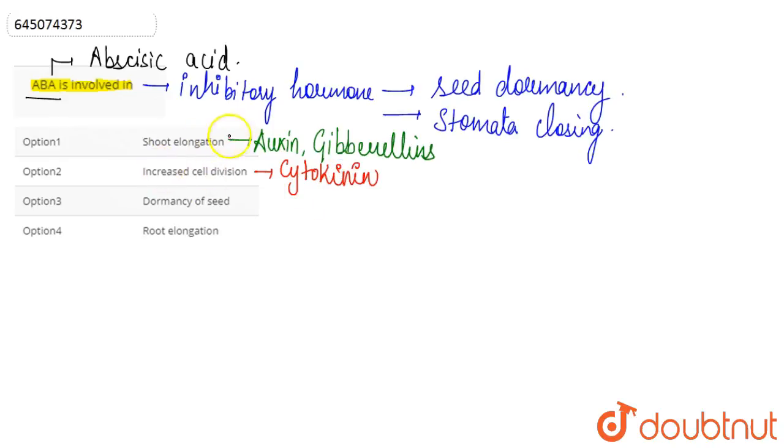Then dormancy of seed, as we've discussed, is promoted by ABA or abscisic acid. And root elongation is basically a function of the auxin hormone. So we can say that option three is the correct answer here.